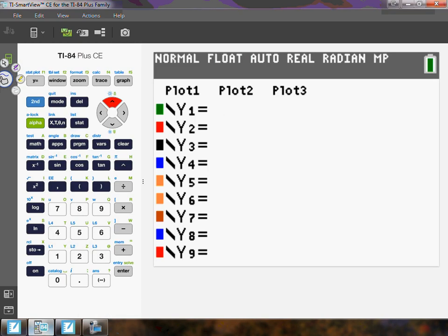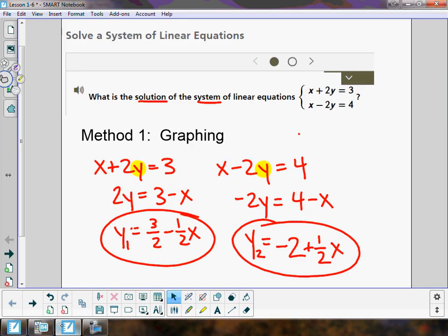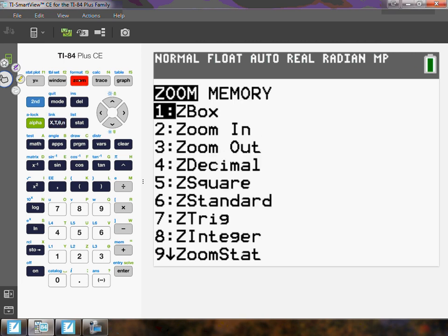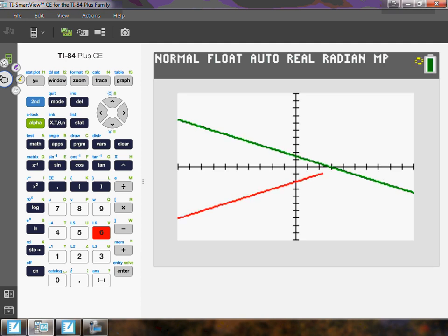Here we go. We're going to put in 3/2 minus 1/2 x, and then in the other one, negative 2 plus 1/2 x. Let's find out where these two lines cross. That will be the solution to the system. Zoom 6, one line, two lines.